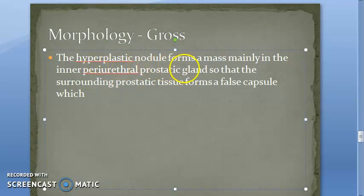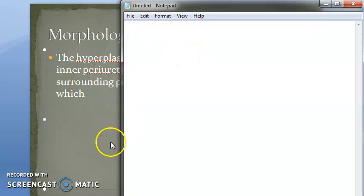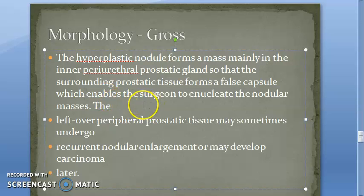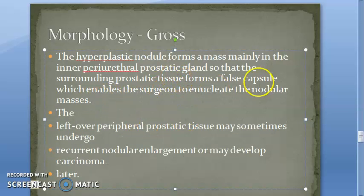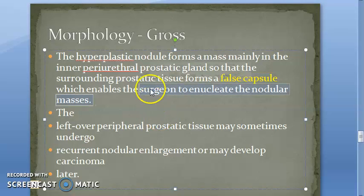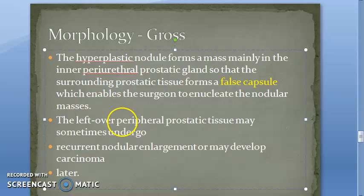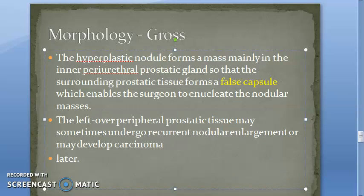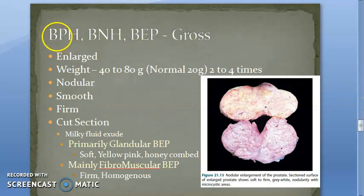The hyperplastic nodule forms a mass mainly in the inner periurethral prostatic gland, so the surrounding prostatic tissue forms a false capsule. This enables the surgeon to enucleate the nodular mass. The leftover peripheral prostatic tissue may sometimes undergo recurrent nodular enlargement or develop into carcinoma later — so leaving the other prostatic tissue carries that risk.